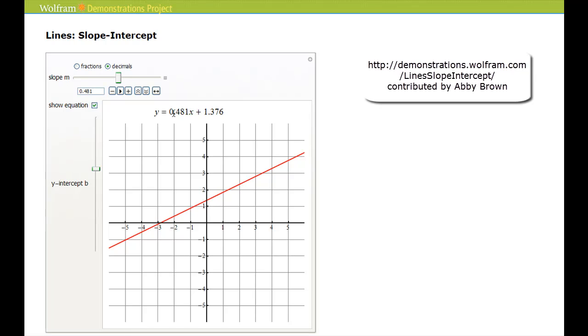Now what I want you to notice is the slope is positive. It's 0.481, and as I increase the slope, the line becomes more slanted or more steep.